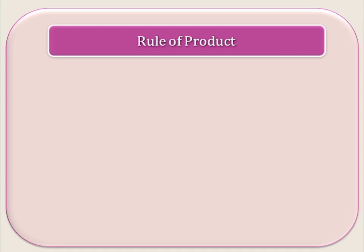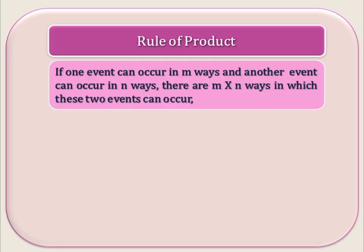In permutation and combination there are 2 important rules. The first one is the rule of product. If one event can occur in m ways and another event can occur in n ways, then there are m × n ways in which these two events can occur together.